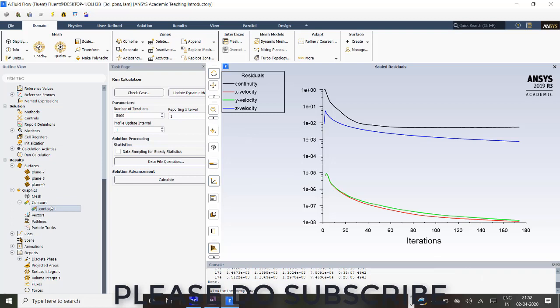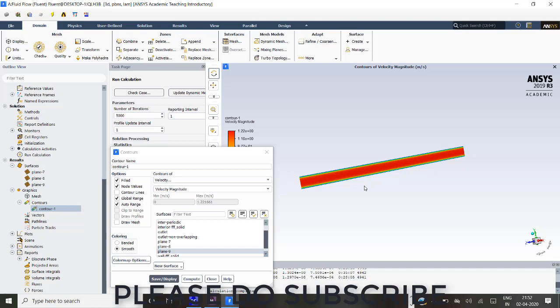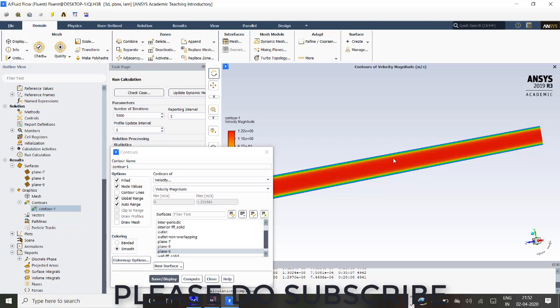You can go to graphics, create a plane. I have created a plane line with X as my direction vector. Go to contours display. Now you can see velocity how it is getting varied.